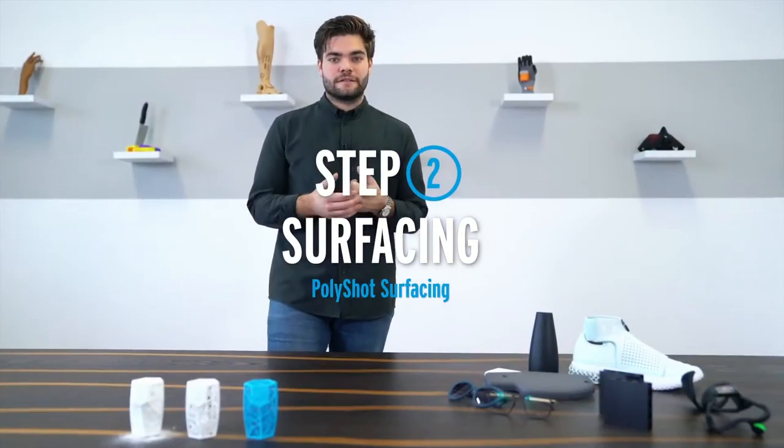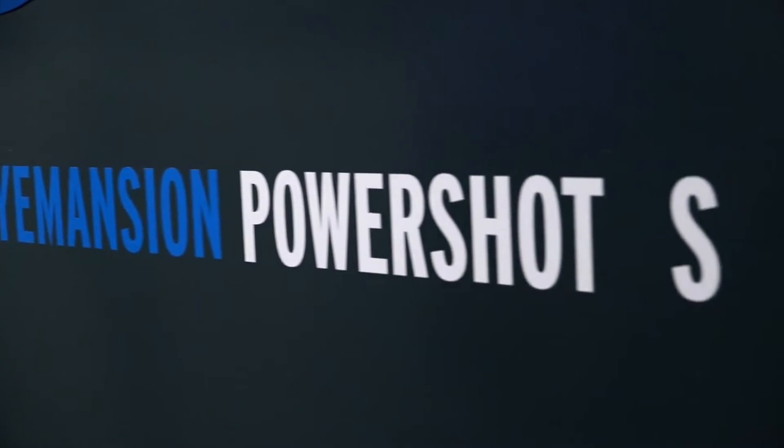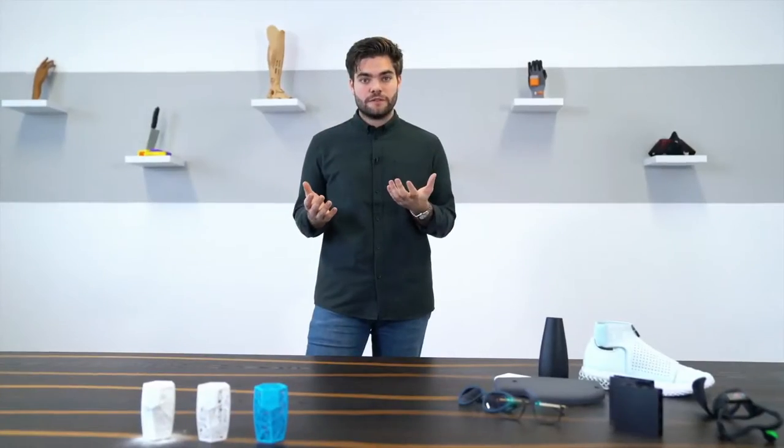The next step after cleaning is surfacing. Therefore we developed the PowerShot S system and the proprietary blasting process called PolyShot surfacing. It's a blasting process with a 10 minute cycle time but with a different media.